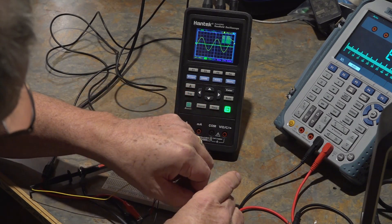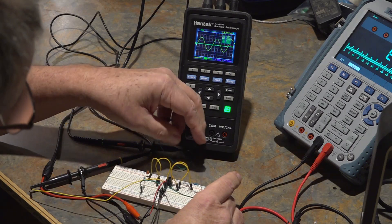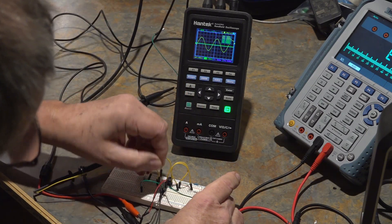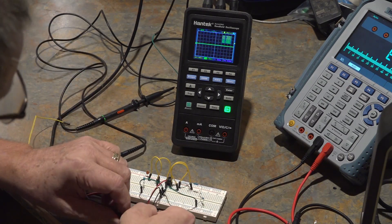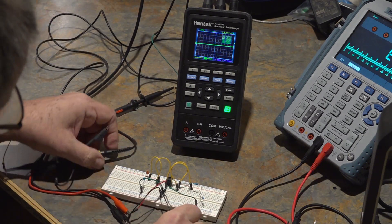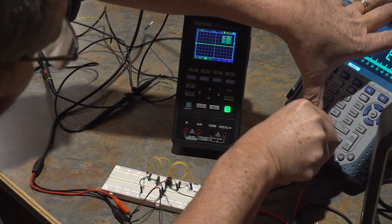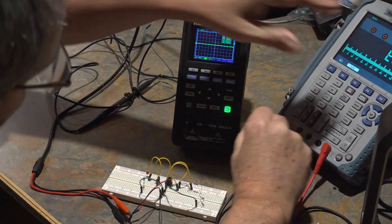We'll get rid of the scope probes because we don't need those. Disconnect the ground. Now we're going to switch the Hantek over to DVM mode. I'm going to steal my leads off of my big brother Hantek there and plug them in. We're now going to be measuring current.